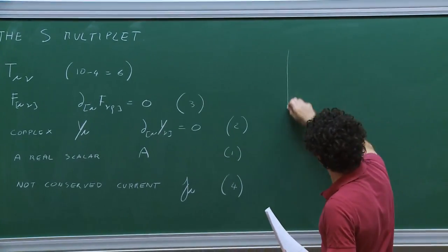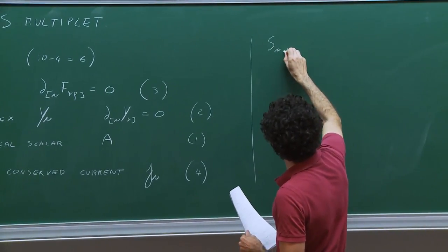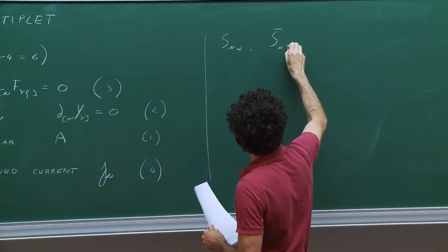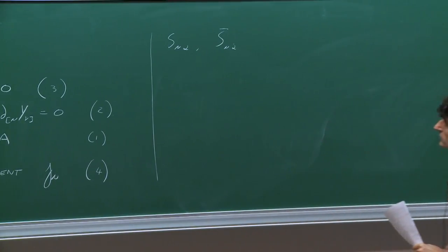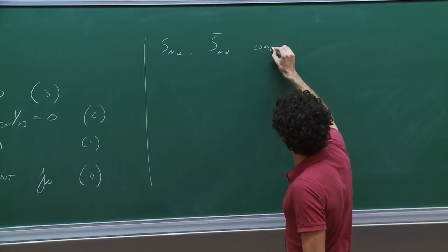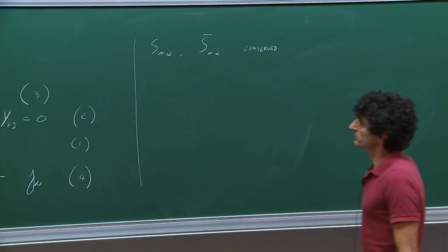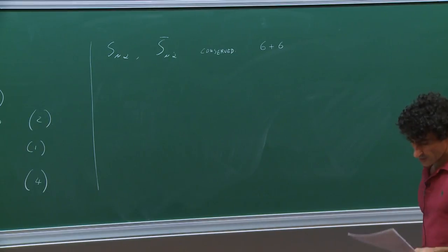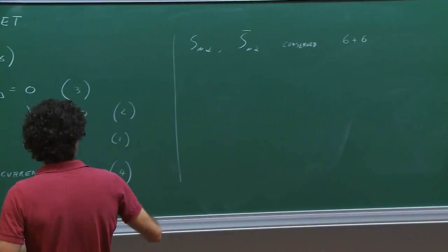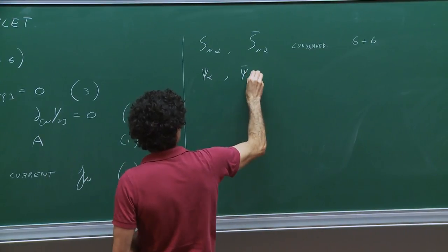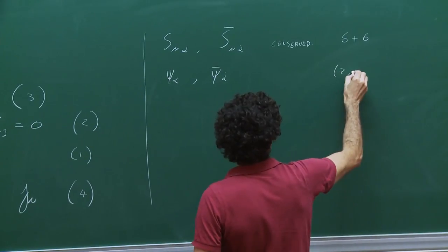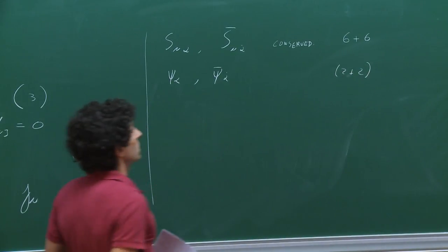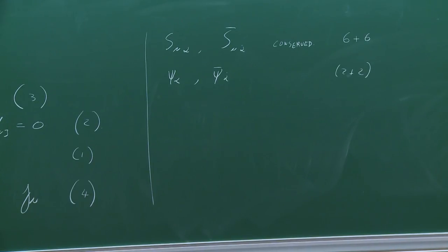On the fermionic side, there is the conserved supercurrent S_{mu alpha} and S-bar_{mu dot{alpha}}, each with 6 degrees of freedom after conservation, plus spin-1/2 fermions psi_alpha and psi-bar_{dot{alpha}} with 2 each, giving 16 fermionic degrees of freedom. So this is a multiplet with 16 bosonic and 16 fermionic degrees of freedom.